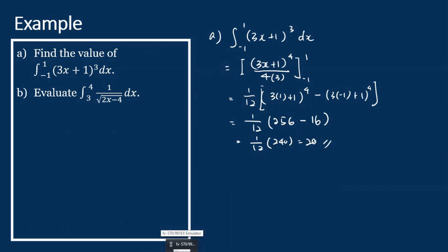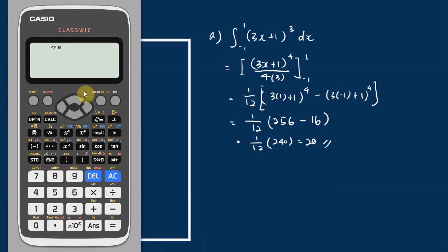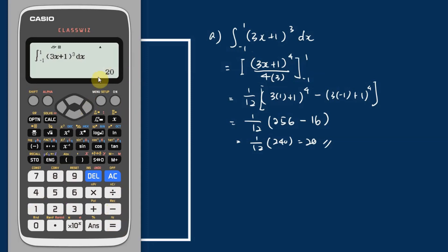Let's use the calculator to verify our answer. In the calculator we can see the integration button — we press it and key in the expression: (3x + 1) to the power of 3. Then we integrate from negative 1 to 1 and press equals. The answer is 20. We can use the calculator to check answers easily by inputting the expression and the boundaries for the integration.